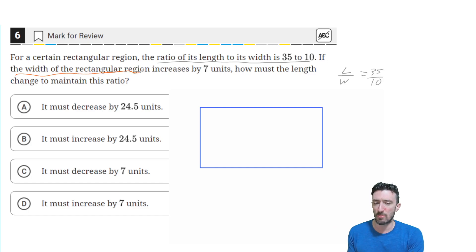If the width of the rectangle increases by 7 units, so whatever W was, it's now going to be W plus 7, we want to know how the length would have to change to maintain the ratio.